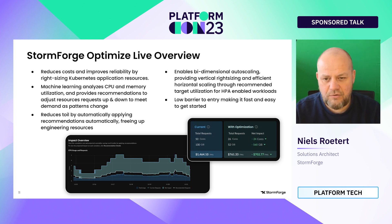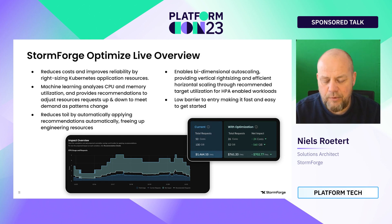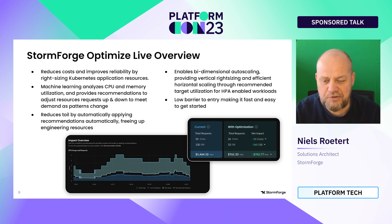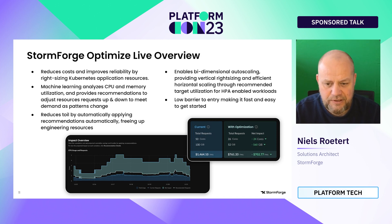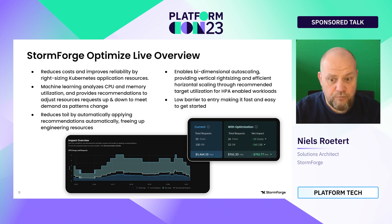This is one of the reasons we're going to talk about StormForge Optimize Live. What it does is look at the metrics of individual containers, compare the requests and limits that have been set — we call them the baseline — to the actual usage. It leverages machine learning to come up with a recommendation that is as close as possible to actual resource usage. This is fully automated and continuous, happening every five minutes.